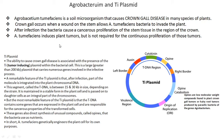Agrobacterium tumefaciens induces plant tumors but is not required for the continuous proliferation of those tumors. All Agrobacterium tumefaciens which are parasites on the plant contain a plasmid called Ti plasmid, or tumor-inducing plasmid. The size of this Ti plasmid is greater than 200 kilobases. More importantly, this plasmid contains a T-DNA region, which is about 15 to 30 kilobases in size depending upon the species of Agrobacterium. The T-DNA contains various specific genes like auxin-producing genes, cytokinin-producing genes, and opine-producing genes.